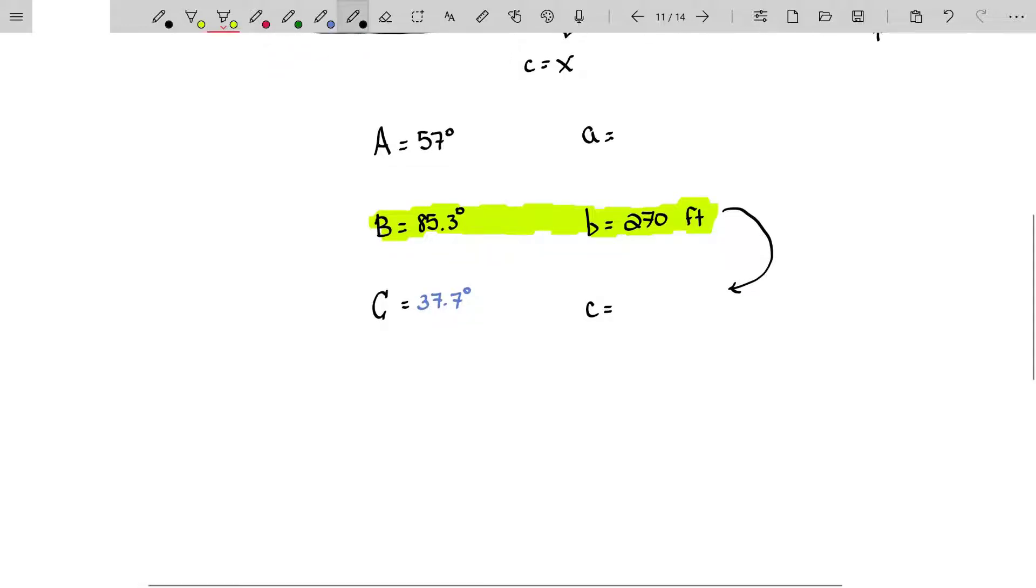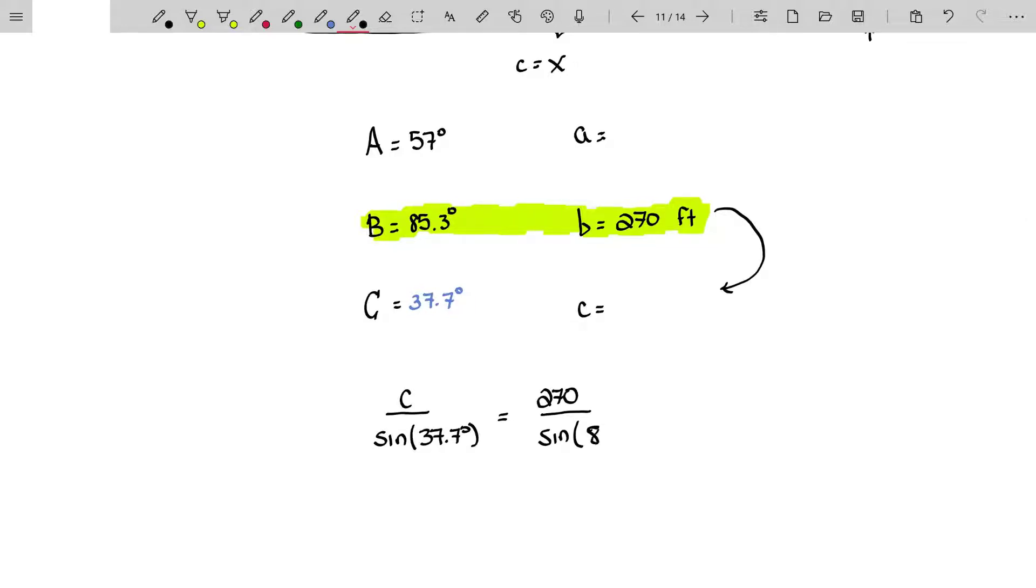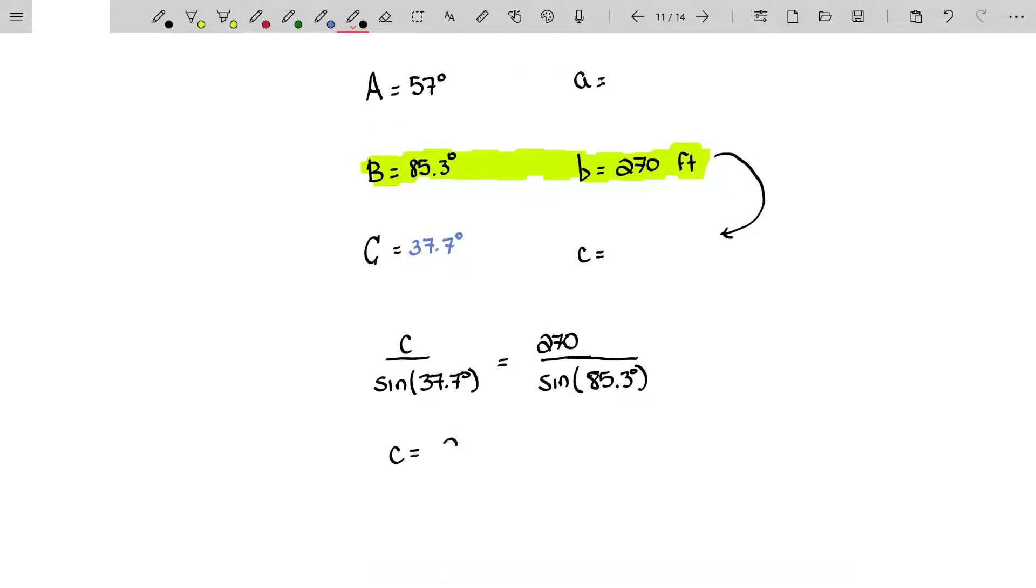Side C is to the sine of its opposite angle, 37.7 degrees, as side B, 270 feet, is to the sine of its opposite angle, 85.3 degrees. Solving for side C here, we have 270 sine of 37.7 degrees divided by the sine of 85.3. That's in degrees. And whatever this answer is, it's going to be in feet. So we're going to divide that by three to get it into yards.